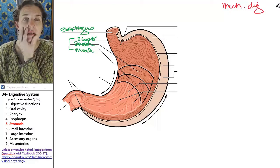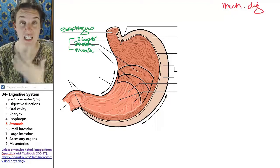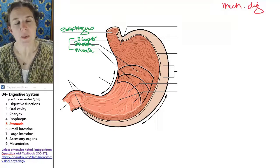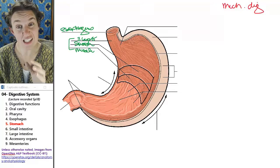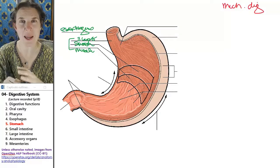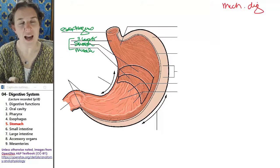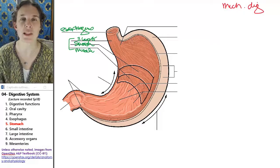The muscles of mastication in your face let your teeth do their job of mechanically breaking down foods. The layers of smooth muscle in the stomach, surrounding the stomach, making up the stomach tube, they allow those layers allow the mechanical digestion of food to continue in the stomach.